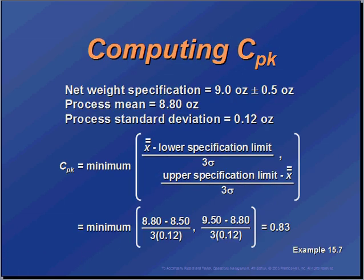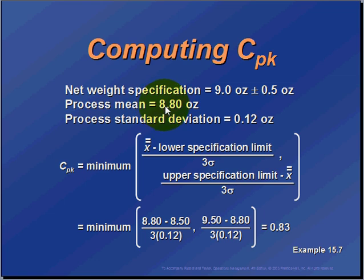Let's take a look at the math and how that would work. In this case, we have a net weight specification on our product of nine ounces plus or minus a half ounce. We have historically found that the process mean is 8.8 ounces, and the standard deviation is 0.12 ounces.